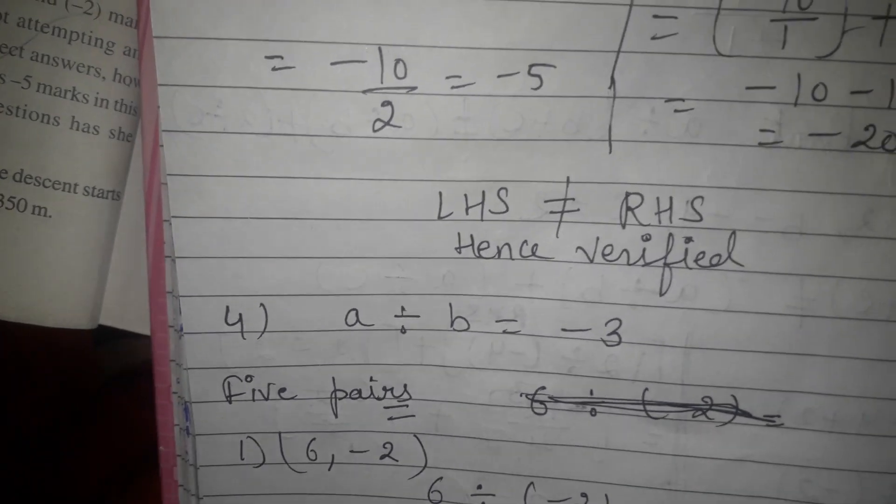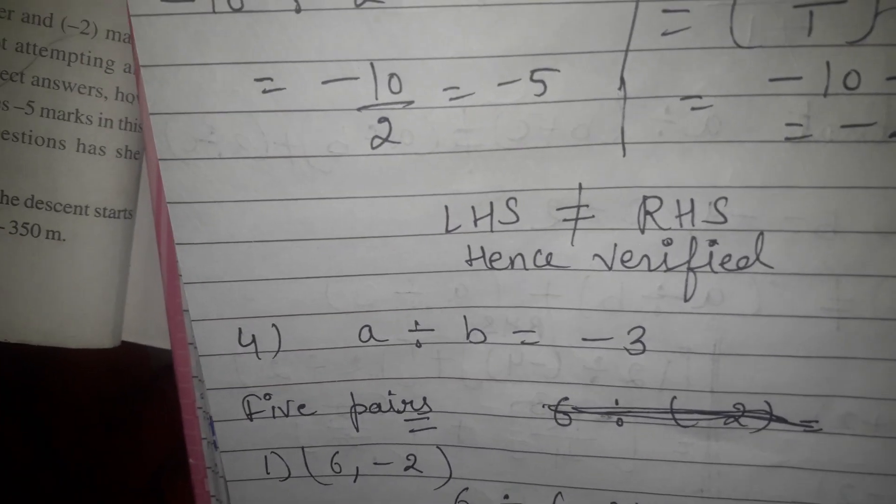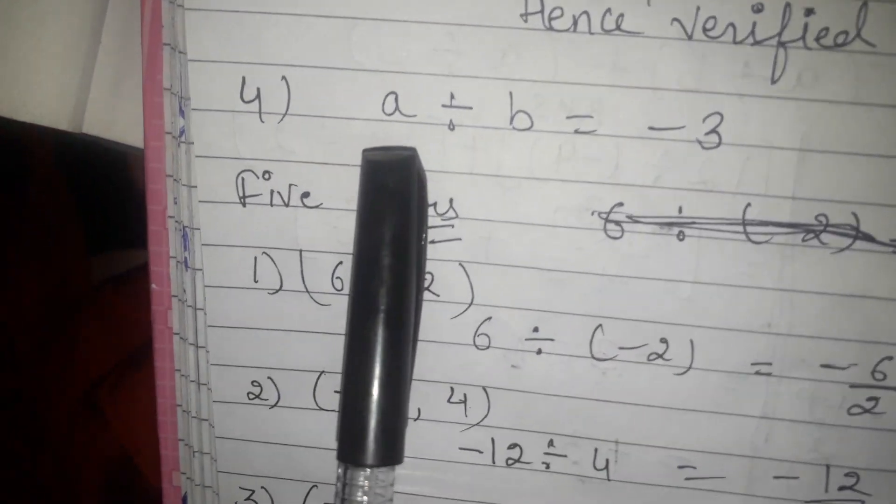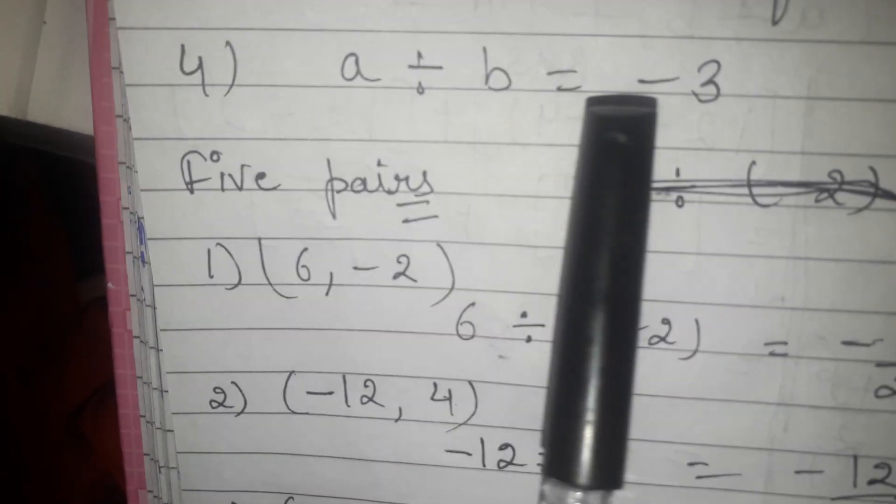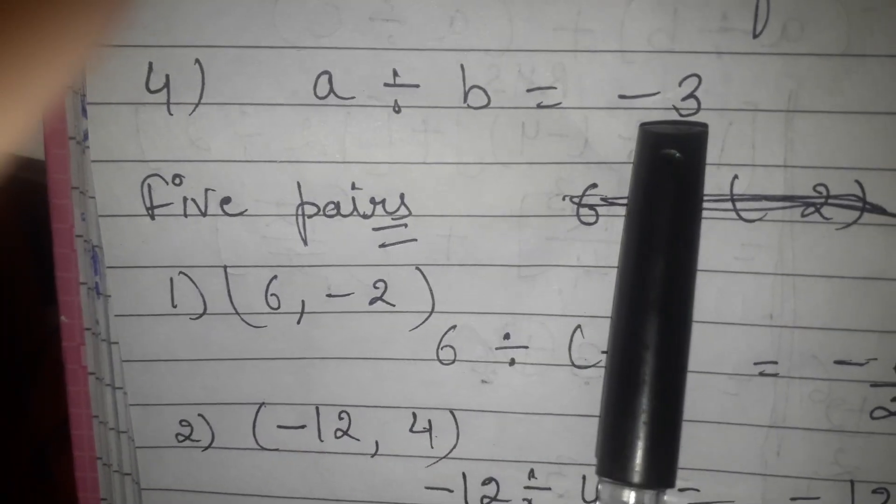Third question is fill in the blanks. You should do this question in book. Let's come to the fourth question. Fourth question is A divided by B is equal to minus 3.